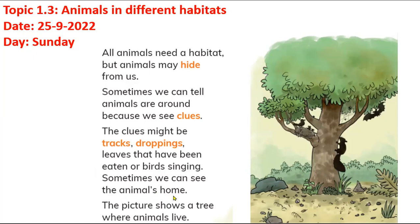Sometimes we see animals' homes, such as a nest in a tree. At home, look around and find out where dogs or cats live — check for waste or droppings. If you find droppings, it means this is an animal's shelter or habitat. You might also hear birds singing.